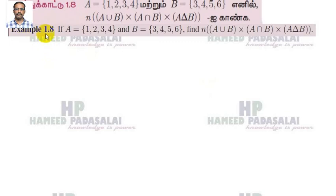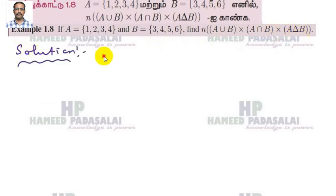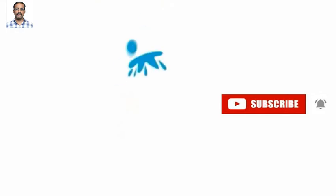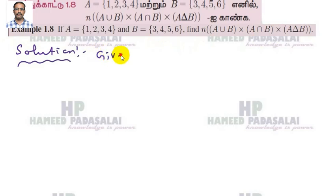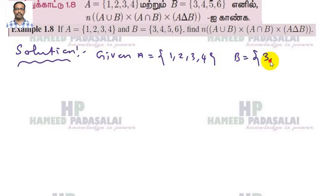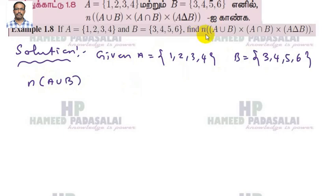Now we are going to discuss Example 1.8. If A is equal to {1,2,3,4} and B is equal to {3,4,5,6}, find the number of A union B, A intersection B, and A symmetric difference B. So first we are going to write the solution. Set A is equal to {1,2,3,4}, set B is equal to {3,4,5,6}.